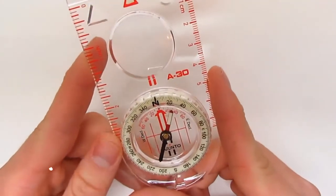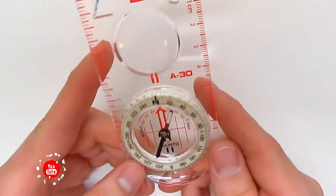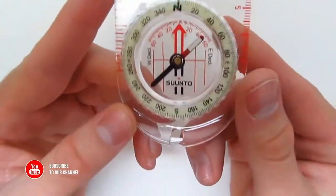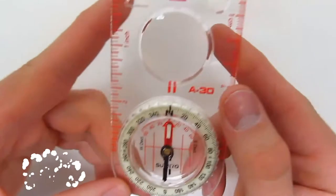All right, this is going to be a quick look at the Suunto Woodsman A30 compass. I picked this up a few weeks ago. It goes for anywhere between $15 and $20.